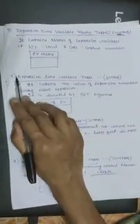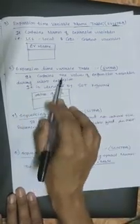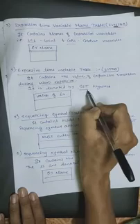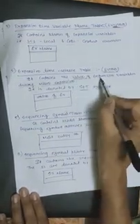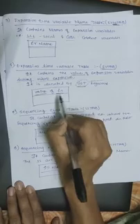The fourth data structure is the Expansion Time Variable Table, that is EV tab. EV tab contains the values of the expansion variables during macro expansion, and values are denoted by the SET keyword. To find the value of an expansion time variable, you find the SET keyword in the program — the value given after SET is the expansion time variable value, and that value is included in EV tab.